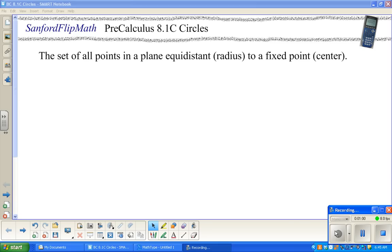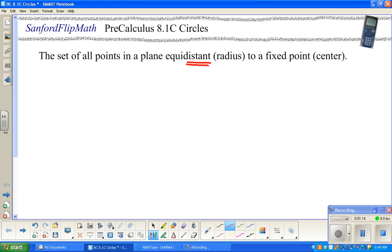We're going to look at the equation of a circle, and I just want to remind you of the definition of a circle: the set of all points in a plane equidistant, so equal distance, to a fixed point. In a circle, that distance is called the radius, and that fixed point is called the center. I know this is no shock to anybody.